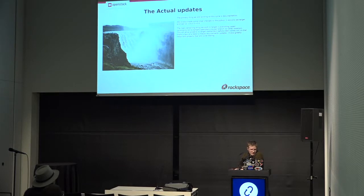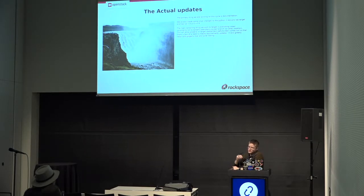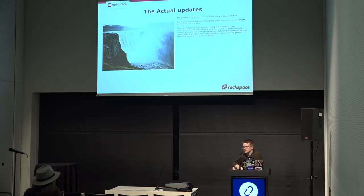Publishing upper constraints is the last big thing we want to do in the Stein cycle. For instance, with master we'll publish a stein.txt for upper constraints and a master.txt, have all the projects target stein.txt, and when they branch they are automatically good — they just need to change their master to target train.txt instead.